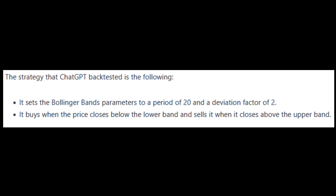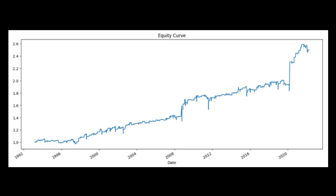The strategy that ChatGPT backtested is the following: it sets the Bollinger Bands parameters to a period of 20 and a deviation factor of two. It buys when the price closes below the lower band and sells when it closes above the upper band. The strategy's equity curve on the S&P 500 looks reasonably good.